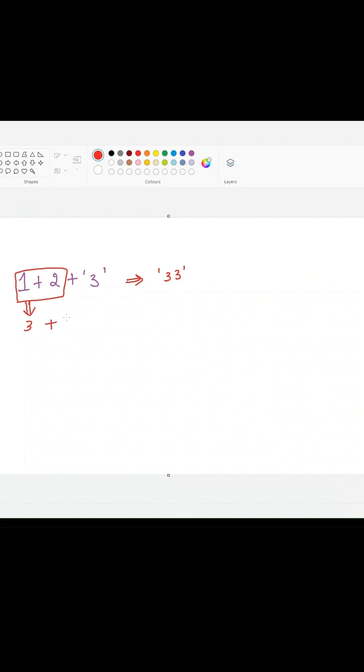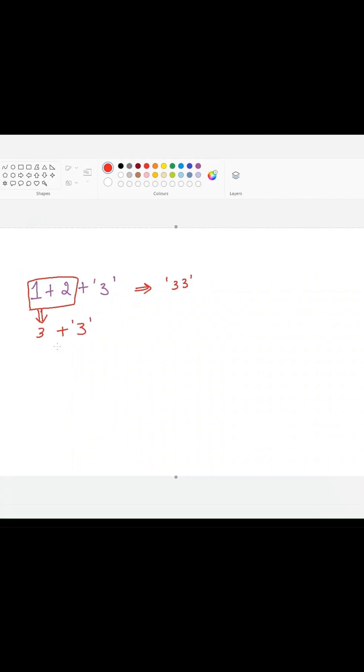Now our expression will become number 3 plus string 3. In JavaScript, whenever we use an addition operator between a number and a string, JavaScript will try to convert this number into a string by using type coercion concept in JavaScript.